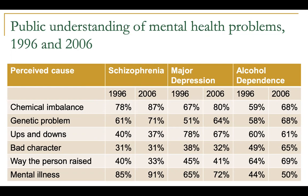However, there are some things not necessarily backed by science that have also seen an increase. One of those is the idea of bad character, which for some reason is more assigned as a contributing factor for alcohol dependence compared to perceptions in 1996. There is also an increase in the belief that the way a person was raised influences alcohol dependence. It's important to understand that the public's perception of mental health influences the development and changes in mental health policy, and that this perception changes over time.